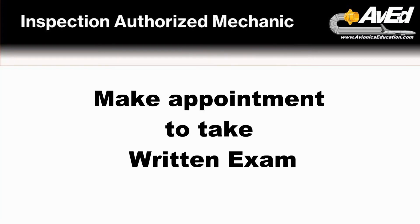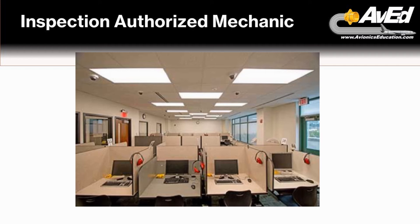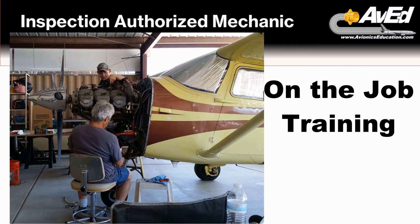Once you get the authorization, you would go to the online testing centers to make an appointment to take the exam. The thing to remember about this exam is that it is not published. A lot of the knowledge comes from working with a small repair station — what the FAA calls an uncertificated repair station — meaning a place where aircraft maintenance is performed, but instead of having an FAA-issued certificate for the entire facility, each mechanic works under their own certificate, including the local IA. You can apprentice with that person and learn the processes of being an IA.